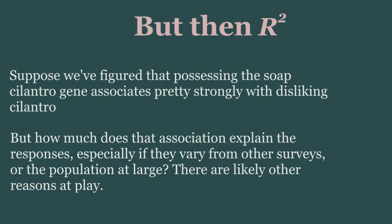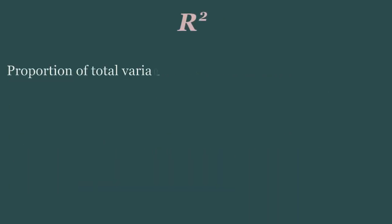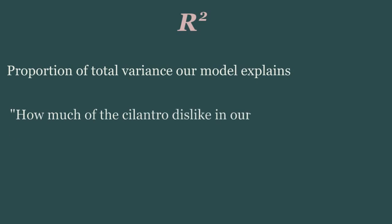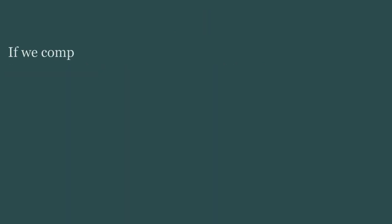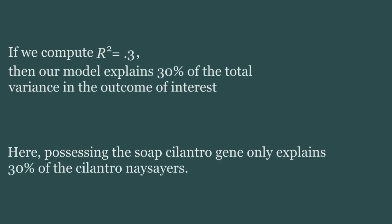For that, we have r squared. For a simple correlation, we just square Pearson's r to get r squared. But for more complex models, we have to calculate it in a different way. However we compute it, r squared signifies what percent of our total variance the model in question explains. So if we get an r squared of 0.3, our model explains 30% of the total variance in our outcome of interest.